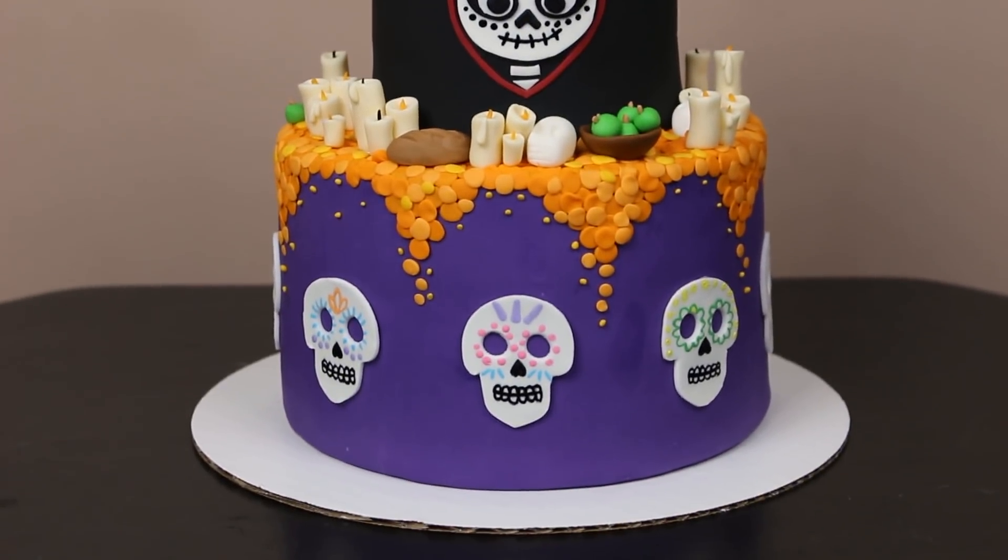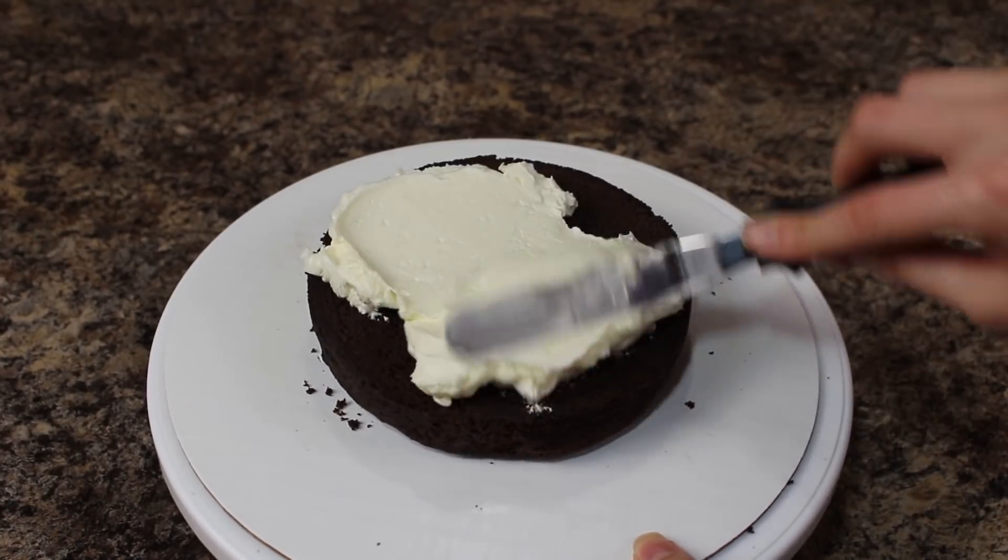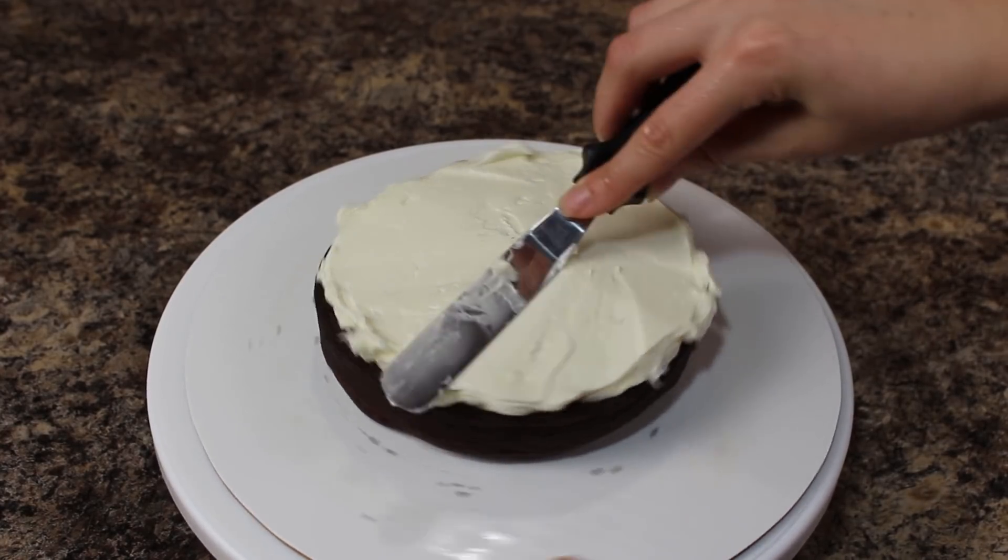To get started, I'm using two six inch cakes that I've leveled and cut in half, and I'm going to be filling those with some swiss meringue buttercream using my small offset spatula.